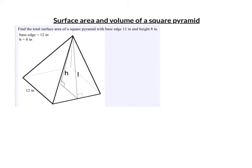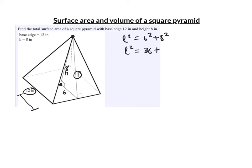This next example is similar to the last one, but now we're given the height. The height is 8, from the center of the square base to the top of the pyramid. The base edge is 12, so the distance from the center to the midpoint of an edge is 6. Using the Pythagorean theorem to find the slant height l: l² = 6² + 8² = 36 + 64 = 100, so l = 10.